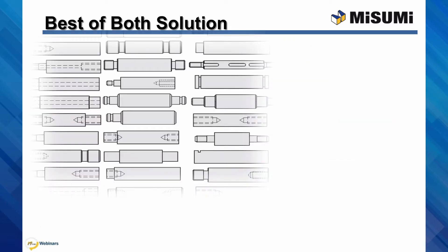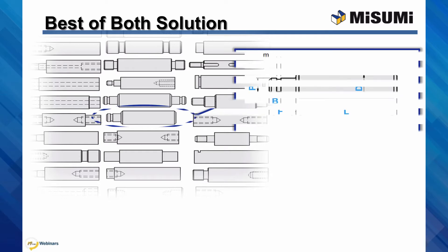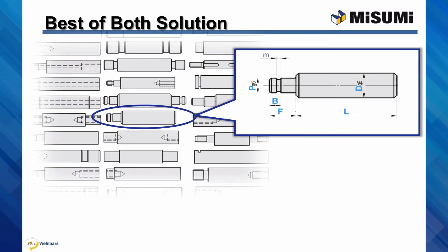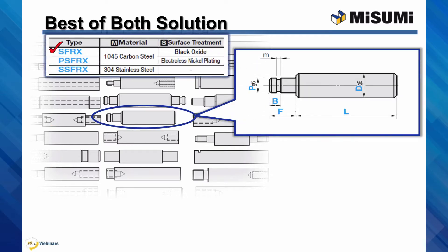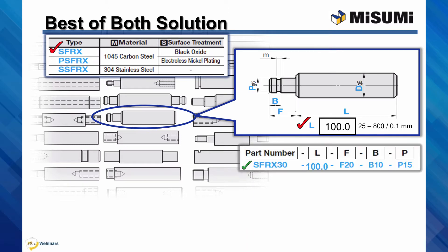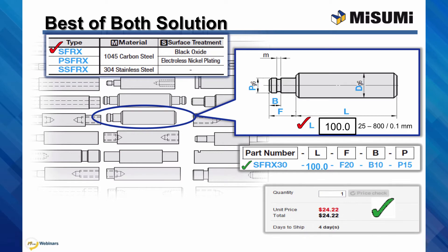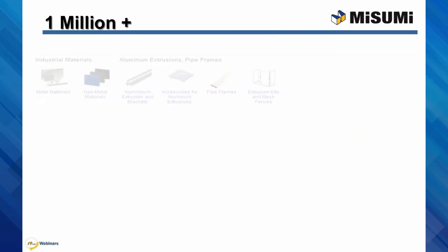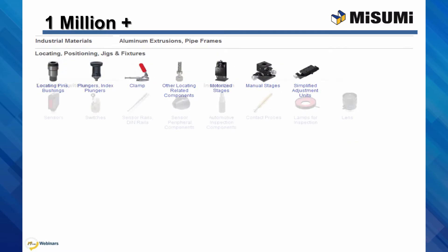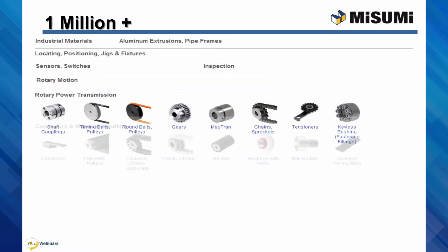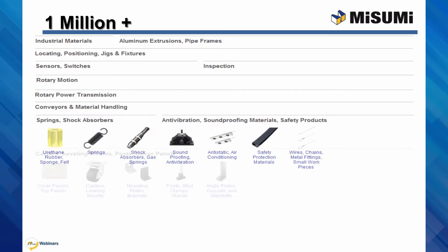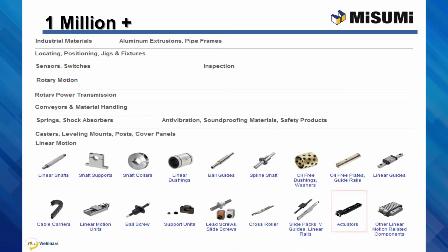Configurable components are easy to design with and purchase. Online, select the product geometry desired, the material and surface finish, and input the size for each configurable dimension within the range and increments shown. You'll get a smart part number, instant price and days to ship, and the CAD model. All of this configurability is available with our over 1 million components, available at MisumiUSA.com.